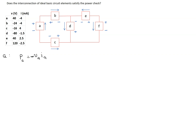After determining the sign of the power expression, we just need to substitute the values and then simplify. So this is minus, the voltage is 40 and the current is minus 4 milliamps. If you simplify this, we get an answer of 160 milliwatts. And because we had two minus signs here, this answer is positive.